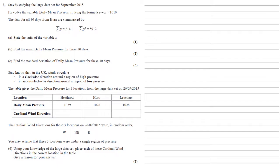We can assume that these three locations were under a single region of pressure. For part D, using our knowledge of the large dataset, we need to place each of these cardinal wind directions in the correct location in the table and give a reason for our answer.